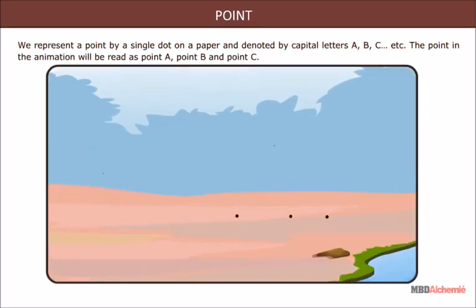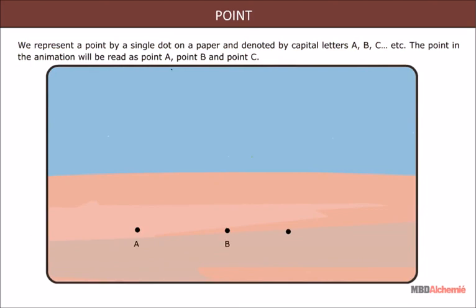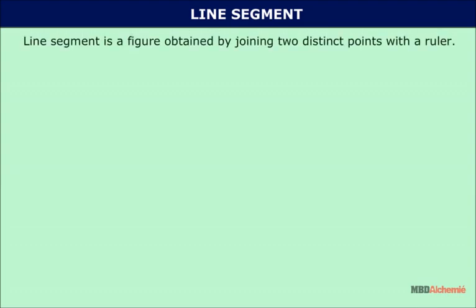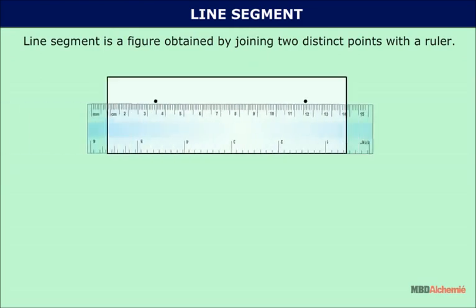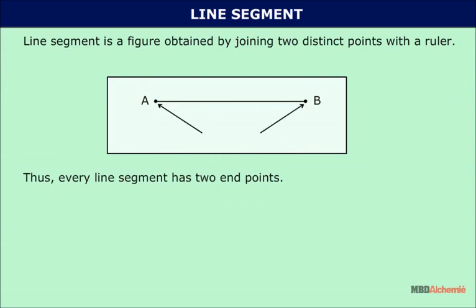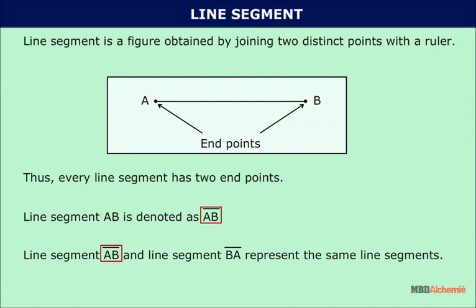The points in the animation will be read as point A, point B, and point C. A line segment is a figure obtained by joining two distinct points with a ruler. Points A and B are called endpoints of the line segment AB. Thus every line segment has two endpoints. Line segment AB is denoted by its endpoints written together with a bar placed over it. Line segment AB and line segment BA represent the same line segment.